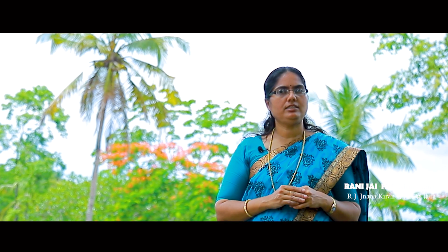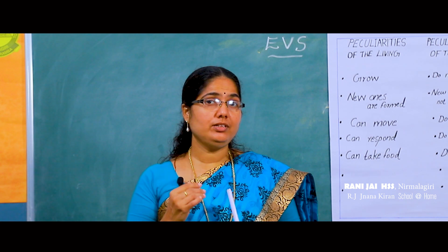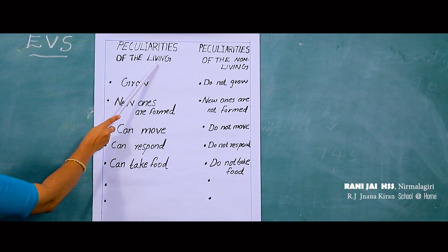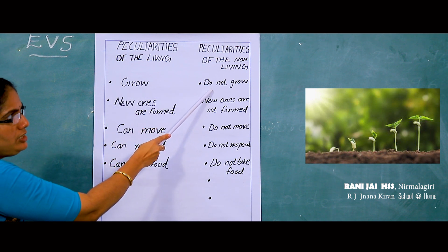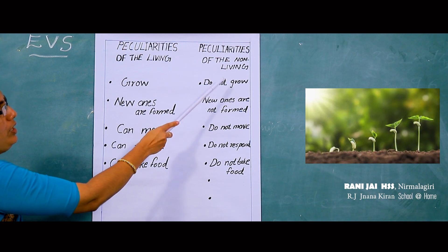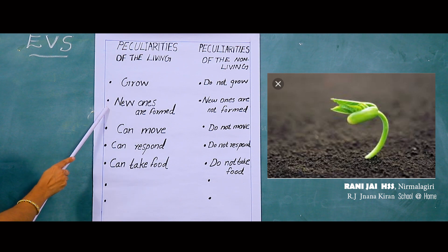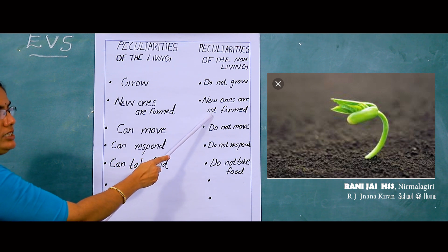Do you know the difference between living things and non-living things? What are the peculiarities of living and non-living things? Now look at this chart. First peculiarity: living things grow, but non-living things do not grow. Next: living things — new ones are formed. Non-living things — new ones are not formed.